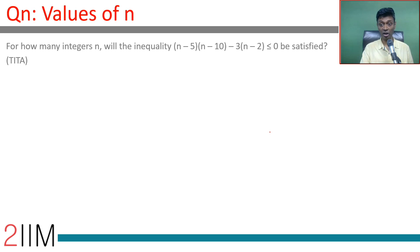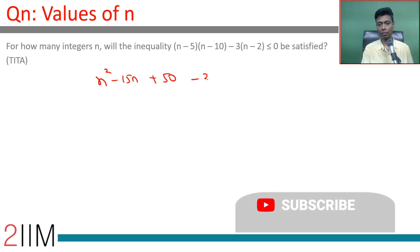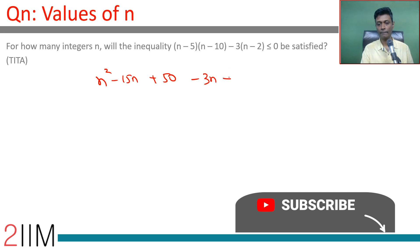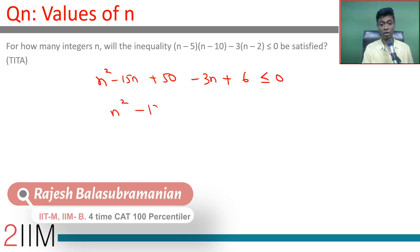How many integers n will the inequality (n-5)(n-10) - 3n + 6 ≤ 0 be satisfied? Let's see if we can factorize this first. Expanding gives n² - 15n + 50 - 3n + 6, which simplifies to n² - 18n + 56 ≤ 0.